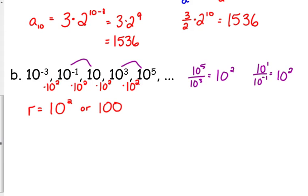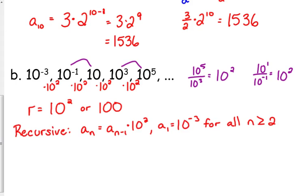So this common ratio is 10 squared or 100. We'll see which way it's easier to express it here in a second. So our recursive definition would be a sub n is equal to a sub n minus 1 times 10 squared or 100. A sub 1 is 10 to the negative third for all n greater than or equal to 2. I'm not going to write the other form because it's the same thing. Our explicit formula: a sub n is equal to, you take the first term, 10 to the negative third, times the common ratio, 10 squared, to the n minus 1.